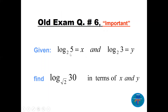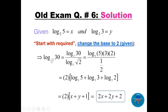Question number six: given log base 2 of 5 = x and log base 2 of 3 = y, find log base √2 of 30 in terms of x and y. Change the required base from √2 to base 2: this gives log base 2 of 30 divided by log base 2 of √2. Since log base 2 of √2 = 1/2, we get 2·log base 2 of 30. Writing 30 = 5 × 3 × 2: log base 2 of 5 + log base 2 of 3 + log base 2 of 2 = x + y + 1. Multiplying by 2 gives the final answer: 2x + 2y + 2.